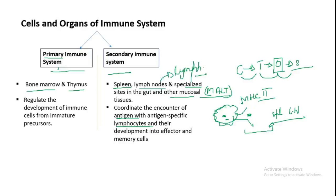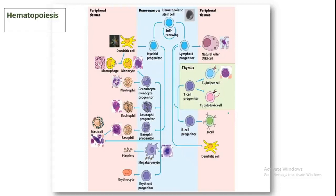Lymph nodes contain B and T cells. When the dendritic cell (antigen-presenting cell) enters the spleen or lymph node, it presents the antigen to T cells. So the encounter between antigen and lymphocytes happens in the secondary immune system — the spleen or lymph nodes — which is why these are called secondary immune organs.